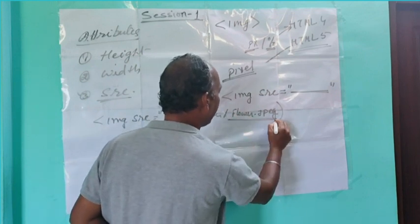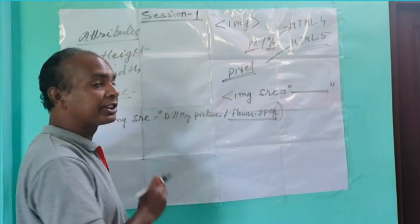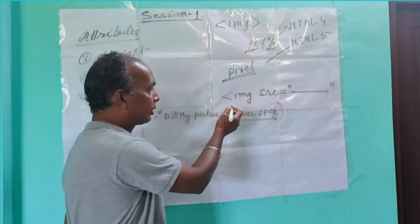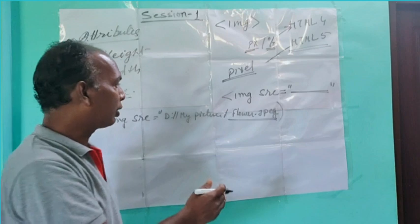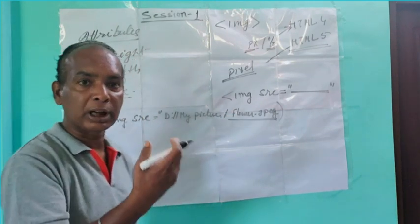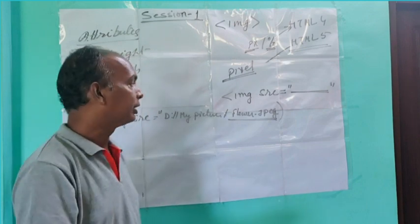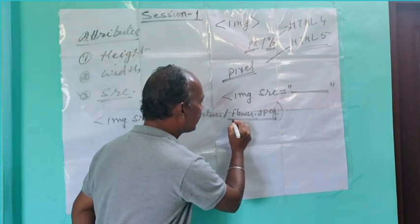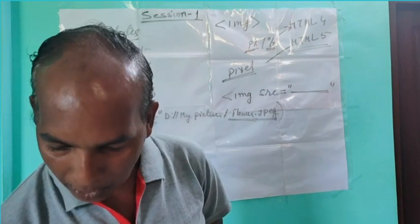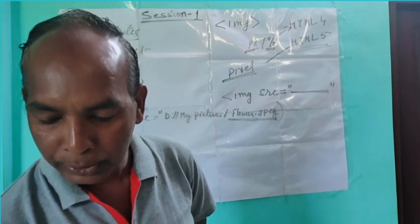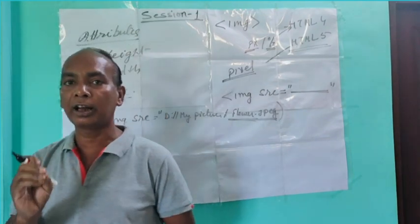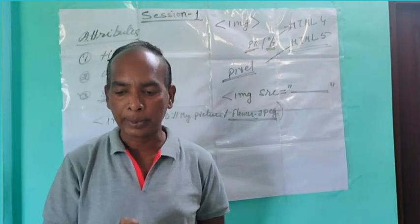The file name should be case sensitive — the spelling must be the same as in the drive. You cannot change characters from small to capital or capital to small; that is what is called case sensitive. The function of SRC is to specify the URL of the image.